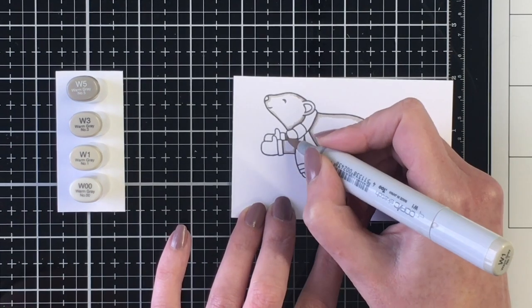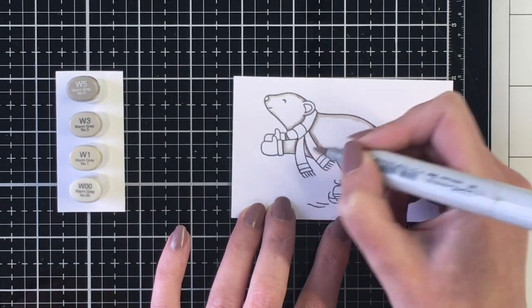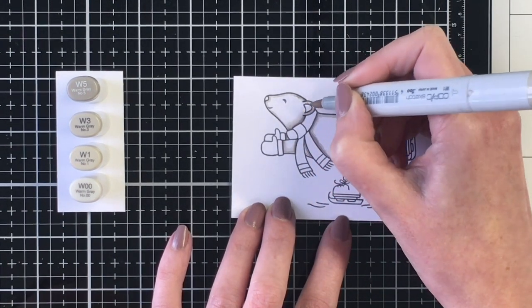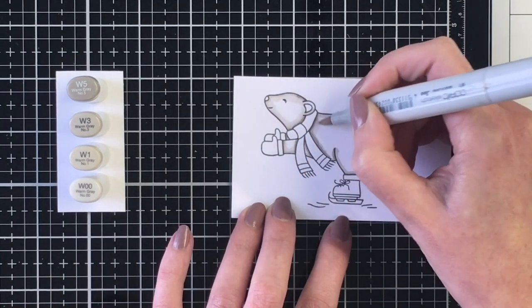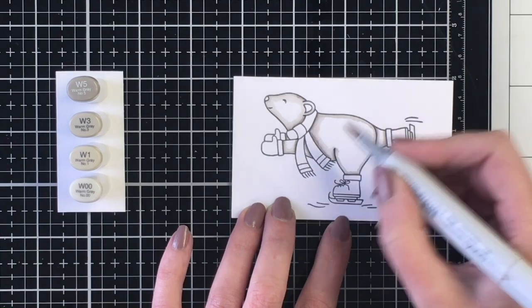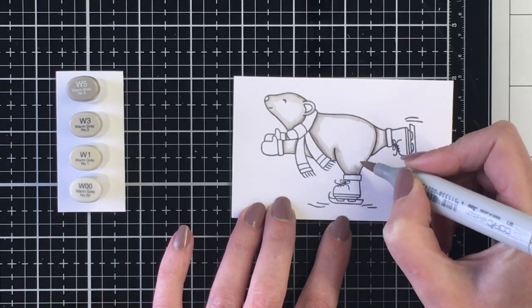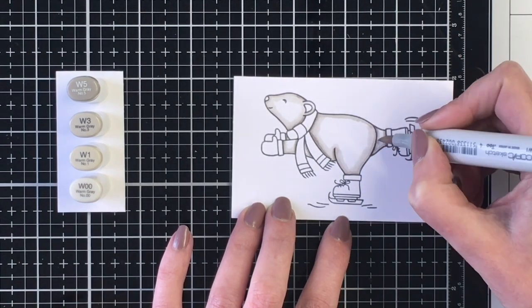I'm going in with my darkest marker here and just laying down the darkest shadows, which would be under his scarf and where his clothes are touching his body. I added some shadows to where his legs touched and then near the tops of his skates as well.